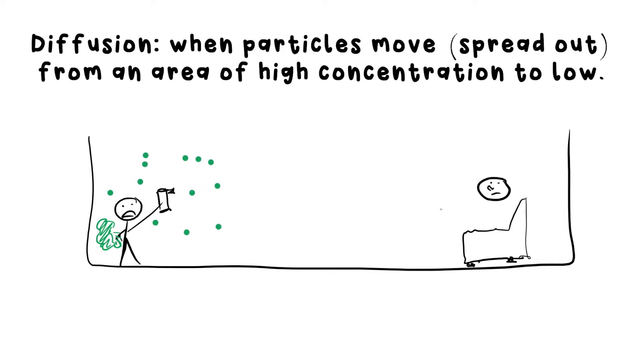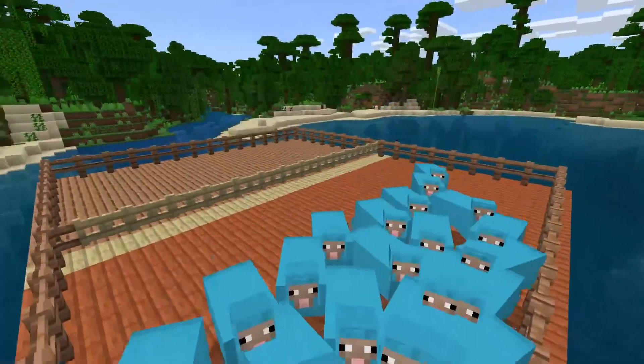Because of diffusion. Diffusion is when particles spread out, and they do this because they can move. If any particles are left to their own devices, they'll diffuse from where there's a high concentration of particles—that means there's a lot in a certain amount of space or volume—to where there's a low concentration. Here's some Minecraft sheep to demonstrate.